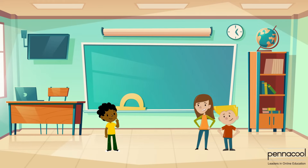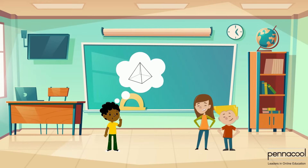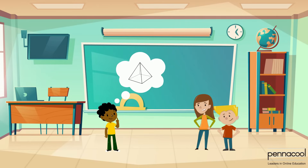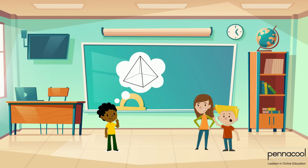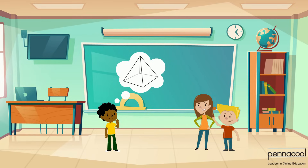Michael was in school and tried to explain the shape of a solid he saw to his friends. For some reason, however, this was difficult for him. His friend Manny decides to help him. Manny asks him some simple questions in order to help Michael describe this solid that he has in mind.